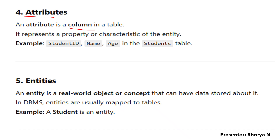If ID is a column in the students table, then ID is an attribute of the students table. In a viva, if asked to identify attributes of a table, you would say: ID is the attribute of the student table. An attribute represents the property and characteristic of an entity — so ID represents a property of the student. A student table may have attributes: student ID, name, age, address, phone number, percentage, and more.